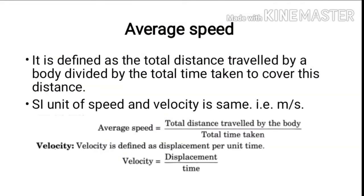Average speed is defined as the total distance travelled by a body divided by the total time taken to cover this distance. The SI unit of speed and velocity is the same, i.e., meter per second. The mathematical expression of average speed is total distance travelled by the body divided by total time taken.